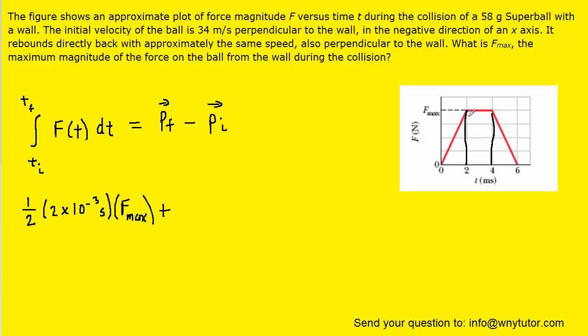We're then going to add the area of the rectangle, which has a base of 2 milliseconds and a height of F max. So multiplying that base times the height would give the area of that rectangle. And then we have a triangle that's actually congruent to the first triangle, so we're going to have 1 half times the 2 milliseconds times the height of F max again.